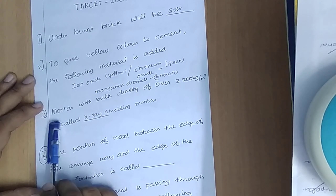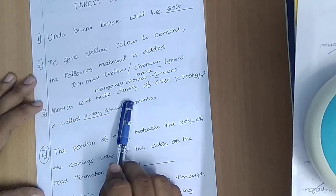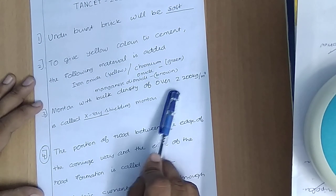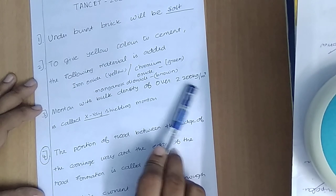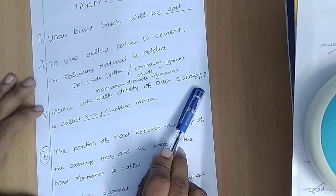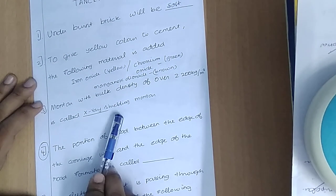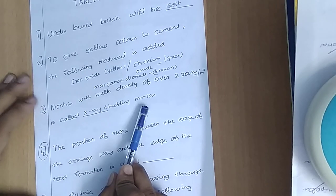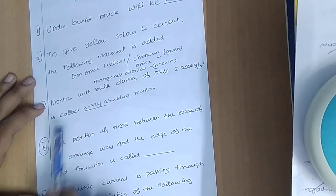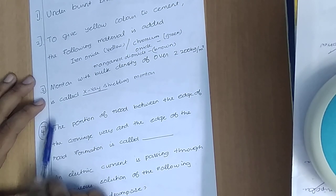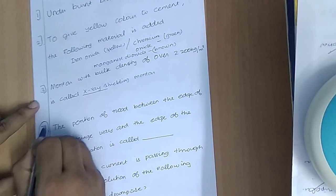Mortar with a bulk density of over 2200 kg per m³ is called x-ray shielding mortar.